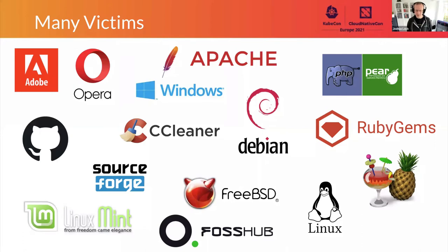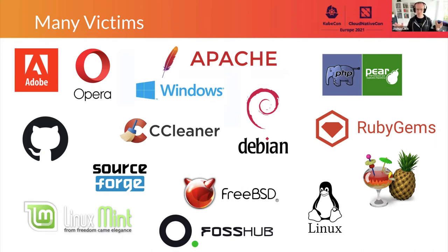You might think that secure software updates are a solved problem, especially if you come from a background of using Linux distributions, where you get all of your software from a single point and it's delivered in a secure fashion. But remote update systems are regularly compromised to deliver malicious content to users. You can see a logo soup of systems that have been compromised effectively to deliver malicious content, and this continues to happen to this day as more software is produced that leverages new and different software update systems.